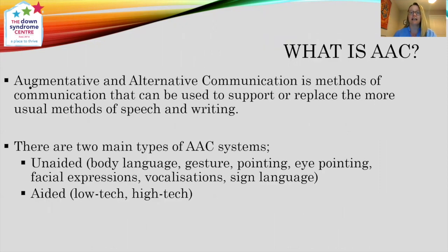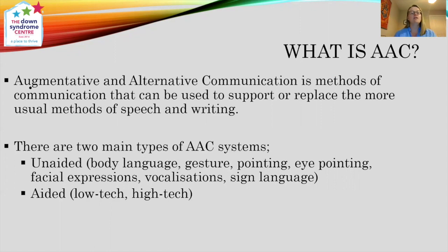So what is AAC? Augmentative and alternative communication. These are methods of communication that can be used to support or replace the more usual methods of speech and writing. So that can be anything we can use to support our speech and language, or use instead of our speech and language. There are two main types of AAC. There's unaided — so we have body language, gesture, pointing, eye pointing, facial expression, vocalisations and sign language. And we have aided, which comes in low tech and high tech.